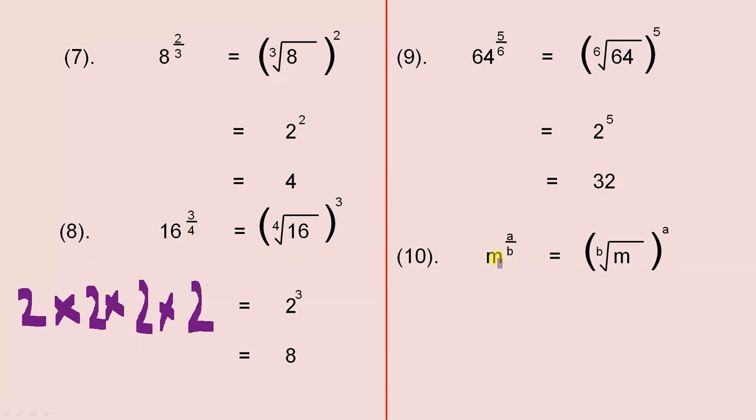So in general terms, if we have m as the base and the fraction of a over b, inside the brackets we have b, the square root of m. So if that's a 2, it's the square root. If that's a 3, the cube root. If that's a 4, the fourth root, etc.